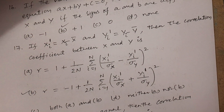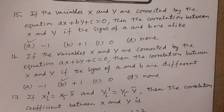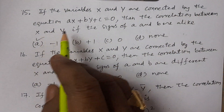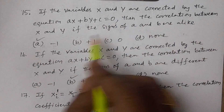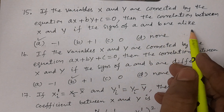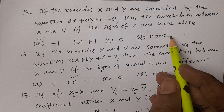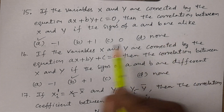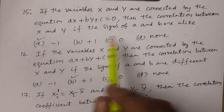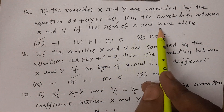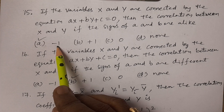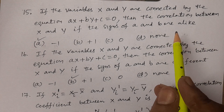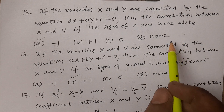Question number fifteen: if the variables x and y are connected by the equation ax plus by plus c equals zero, then the correlation between x and y — if the signs of a and b are alike, the correlation coefficient is minus one. If the signs of a and b are different, the correlation coefficient r equals plus one.